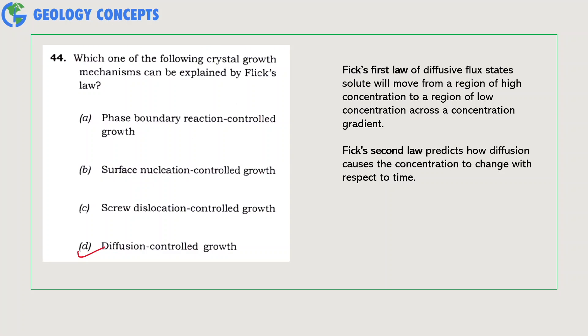Which one of the following crystal growth mechanisms can be explained by Fick's law? For crystal growth to happen, ions must move to the nucleation site or diffusion site. This can be explained through Fick's first law of diffusion, which states that solute will move from a region of high concentration to a region of low concentration across a concentration gradient. So option D, diffusion-controlled growth, will be the correct answer. Also, Fick's second law predicts how diffusion causes the concentration to change with respect to time.